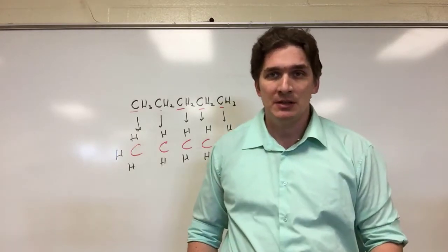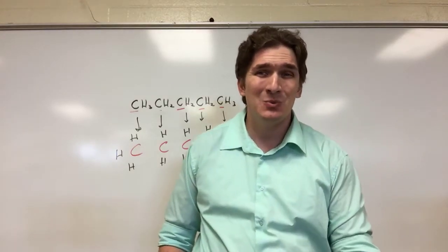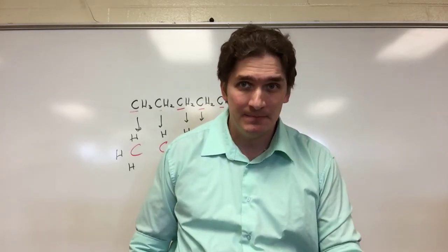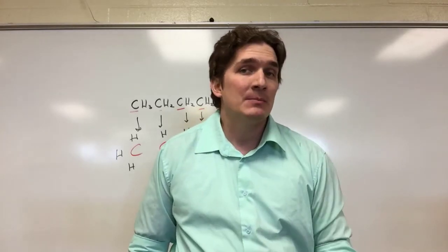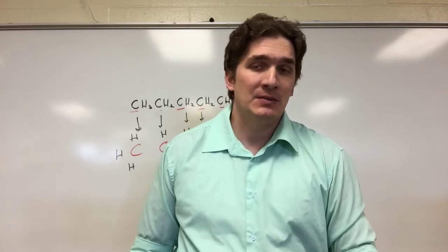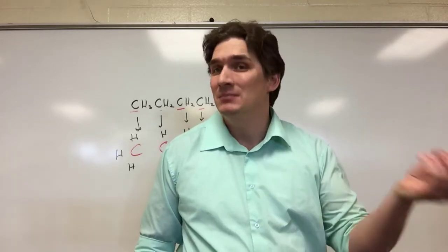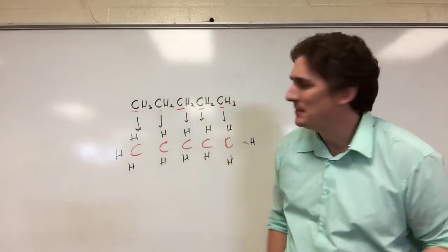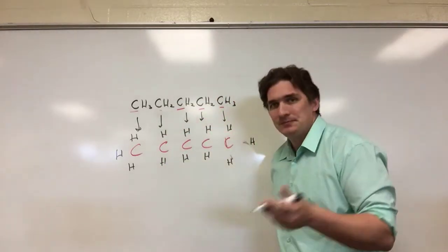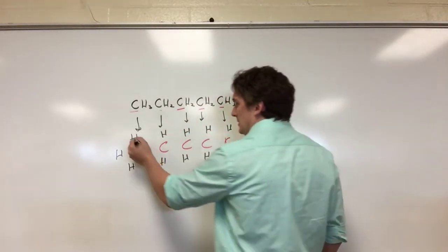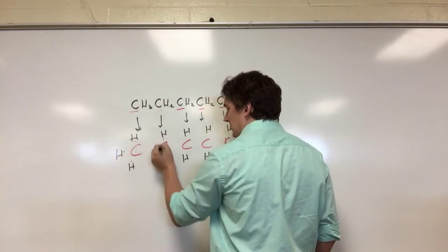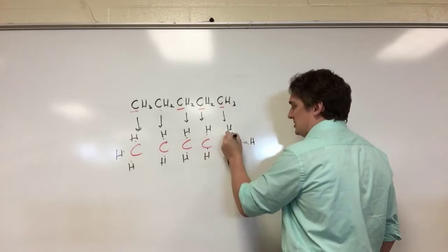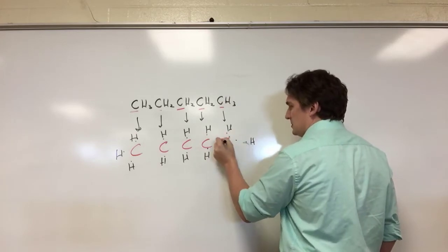You've still got method one and method two. I would advocate using the one where you start by putting the valence electrons around each atom, because it's going to make it more obvious how things are connected. In the next video, we'll talk about some ways of short-circuiting a lot of this. So we have each hydrogen starting with one electron and each carbon starting with four.